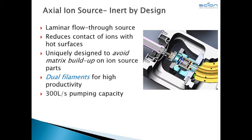Another challenge comes from the buildup of matrix in the source. Target compounds in samples at the end of the batch can come into contact with matrix buildup and simply stick, thus never having a chance to be analyzed due to the complete loss of sensitivity. Other designs utilize coatings or different metals to help reduce the effect, but really only address the symptom. The Scion 436 Innovative Axial Ion Flow addresses the cause — sample contacting the source surface. All other designs have the column flow coming into the source at a right angle, causing severe turbulence, which forces contact between the sample and the source's hot metal walls. The axial flow design brings the column flow through the rear of the source and down the centerline, reducing turbulent flow and contact with the hot metal surfaces. No contact, no breakdown, no matrix buildup, fewer source cleanings.